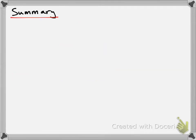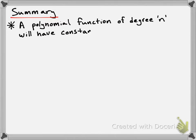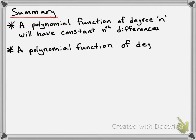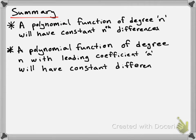To summarize what we talked about in this video: first, a polynomial function of degree n will have constant nth differences — so a 7th degree polynomial function will have constant 7th differences. Second, a polynomial function of degree n with a leading coefficient of a will have constant nth differences equal to a times n factorial. So a is the leading coefficient, n is the degree, and you compute a times n factorial. I hope this helps — take care.